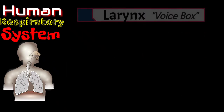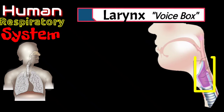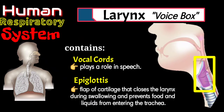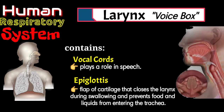Next part is the larynx. It contains vocal cords that vibrate on exhaled air to produce sound. Next is the epiglottis. It is a flap of cartilage that closes the larynx during swallowing and prevents food and liquids from entering the trachea.